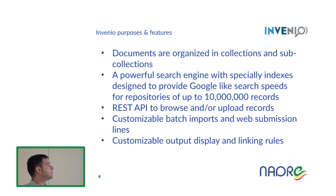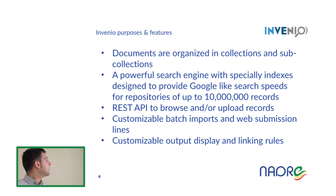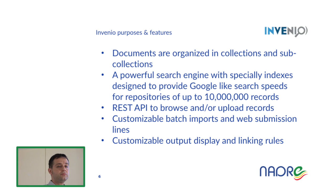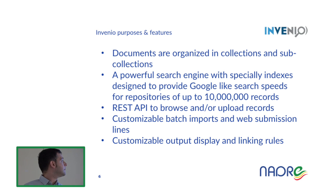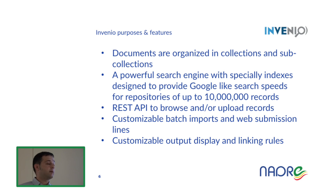In Invenio, the documents are organized in collections and sub-collections. We have already created the collection where your documents and data will be stored, and we can also provide many other sub-collections for your institution. Another important feature of Invenio is its powerful search engine, meaning the index of documents and objects stored in the repository is especially designed to provide speed when you look for something. It also provides a REST API that you can use in your own application to develop, for example, a nicer interface for the repository.